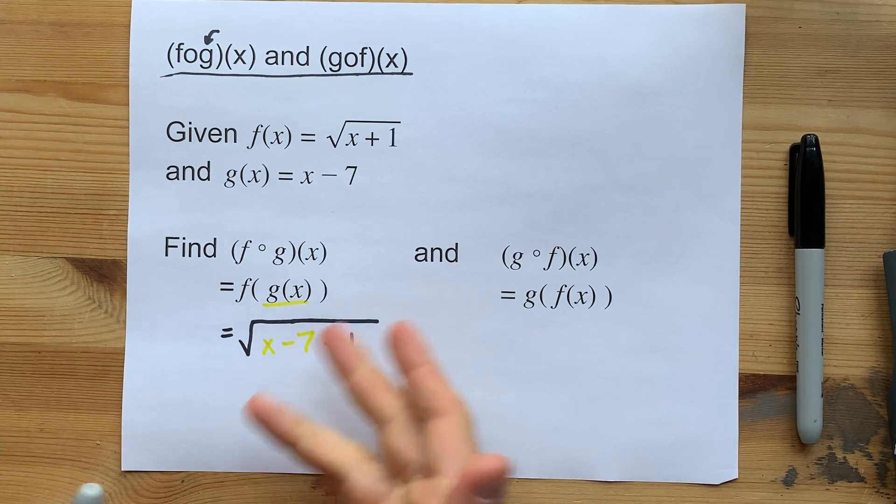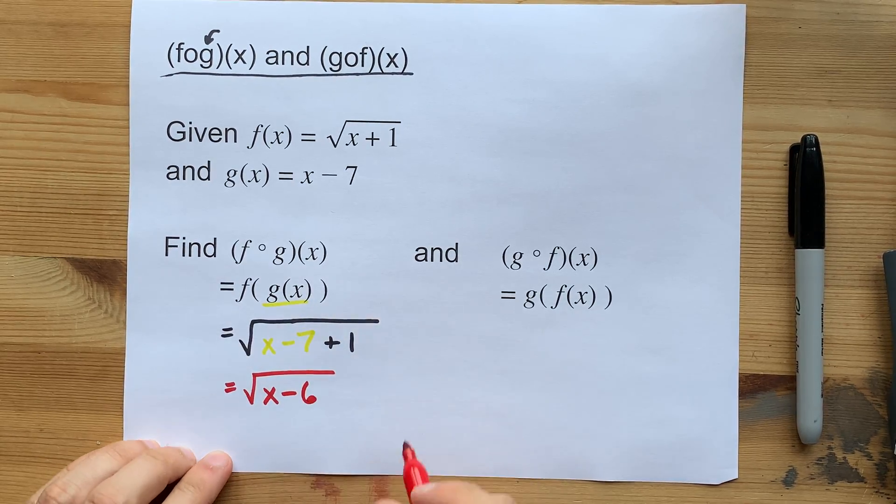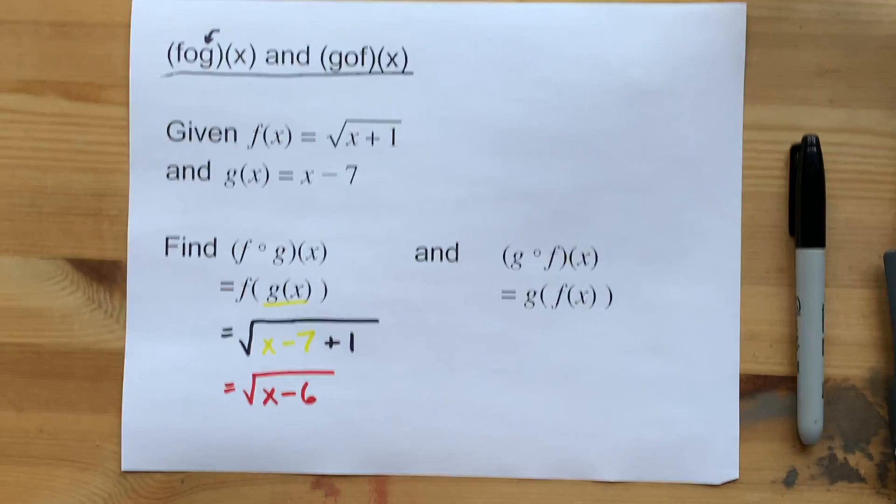You can simplify this as much as possible. I get the square root of x minus 6. Looks a little different than what we started with, but hey.